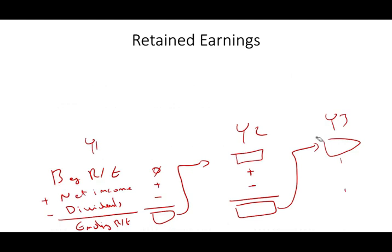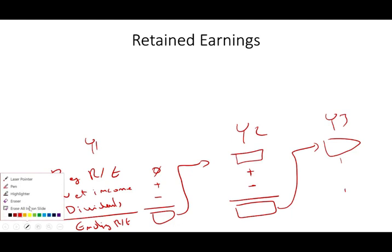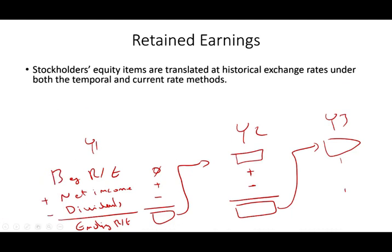So the point is retained earnings is a continuous, cumulative account that factors all revenues, expenses — because net income is revenues and expenses — revenues, expenses, dividends, gains, and losses over the years.